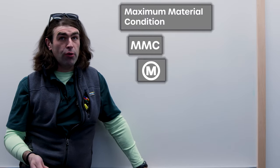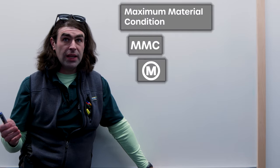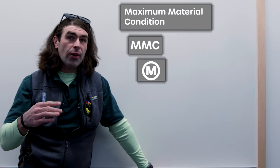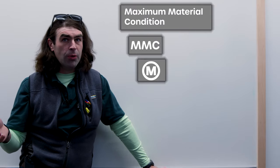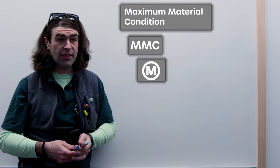If it's in the feature control frame, it's going to be a symbol. If it's in a drawing note, it could be either written out or as an abbreviation. And when we're talking about things, we typically will write the abbreviation and not the symbol. I'll show you what I mean in just a second.